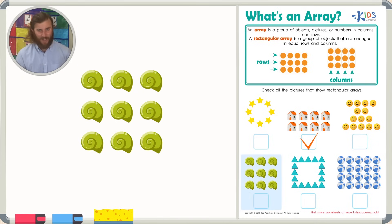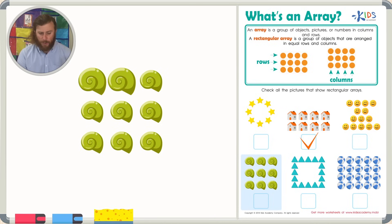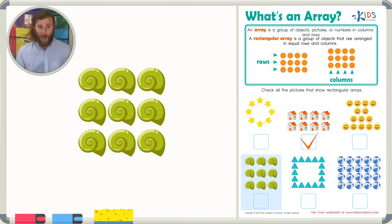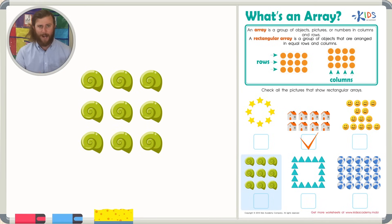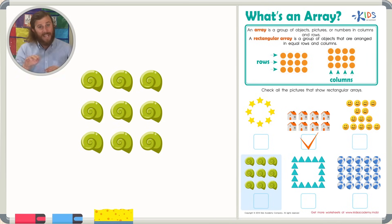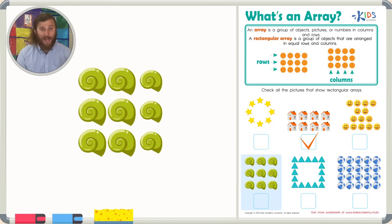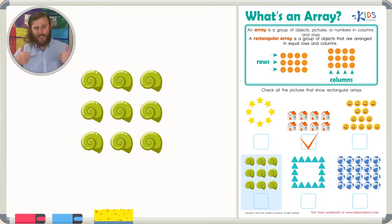In our next picture, I see snails. Let's take a closer look and see if this is really an array. There are three in the first row, three in the second row, and three in the third row. Now let's check the columns just to be sure. There are three in the first column, three in the second column, and three in the third column. This is definitely a rectangular array — let's go ahead and give this a check.